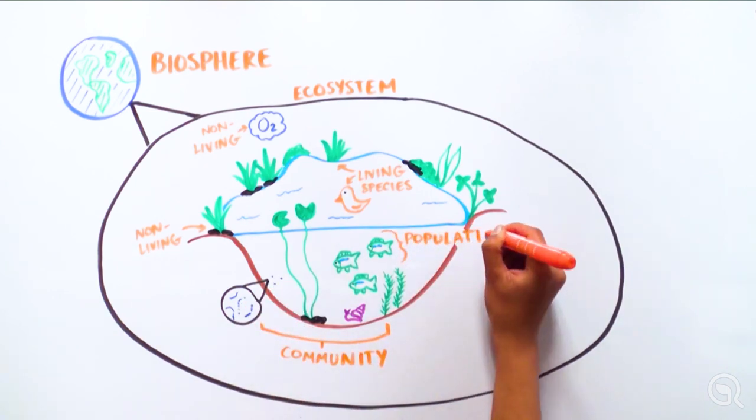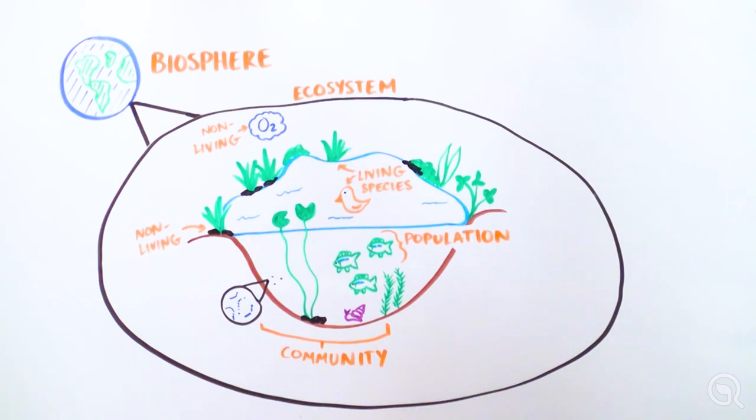Next, we have a population, which is a group of the same species that compete and breed together in a location, such as a population of bluegill fish.